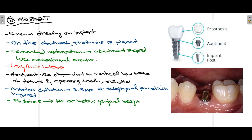The second part of a dental implant is the abutment, which is placed on top of the fixture. The abutment is basically a screw directly placed on the implant, and on this abutment the prosthesis is eventually placed. As seen here, the abutment is inserted into the fixture and the prosthesis placed on top will be visible clinically. In cemented restorations, the abutment is shaped like a conventional crown.